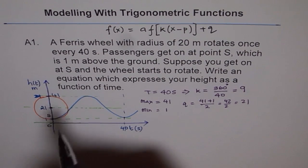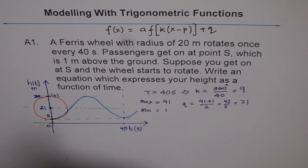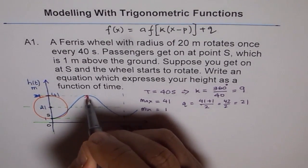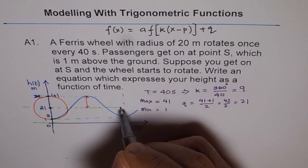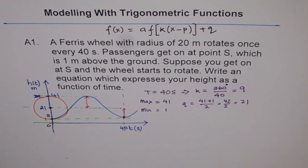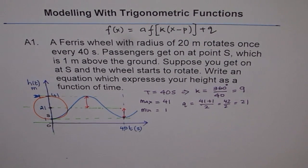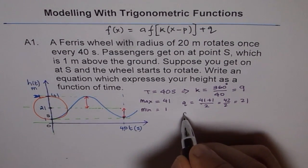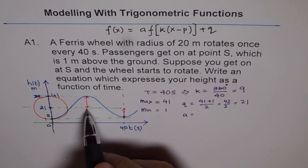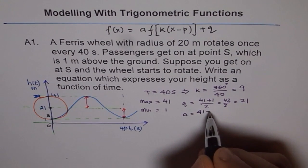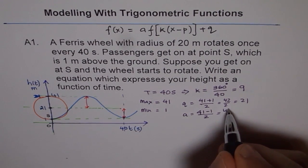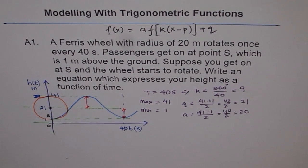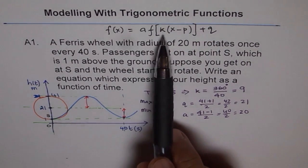The average value gives us the value of Q. So Q equals 41 plus 1 divided by 2, which is 42 divided by 2 equals 21. Amplitude is the value from the average to the maximum. We always consider amplitude as positive. A is maximum minus minimum divided by 2. So it is 41 minus 1 divided by 2, which equals 40 divided by 2, equals 20. So we have the values for A, K, and Q.